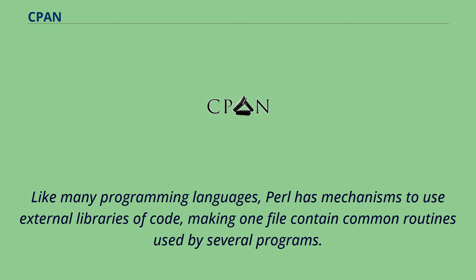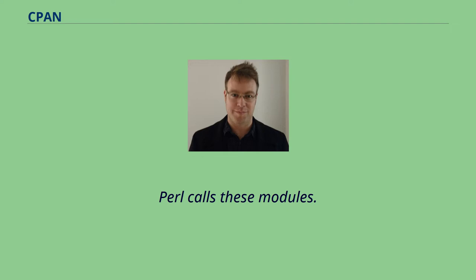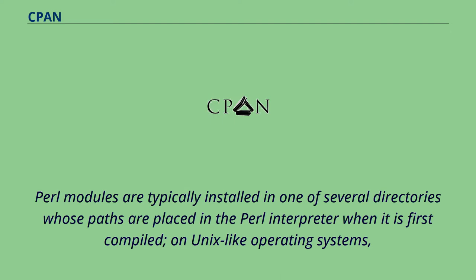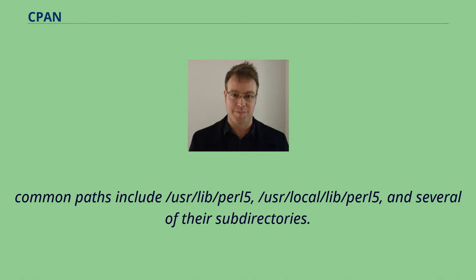Like many programming languages, Perl has mechanisms to use external libraries of code, making one file contain common routines used by several programs. Perl calls these modules. Perl modules are typically installed in one of several directories whose paths are placed in the Perl interpreter when it is first compiled, on Unix-like operating systems. Common paths include /usr/lib/perl5, /usr/local/lib/perl5, and several of their subdirectories.